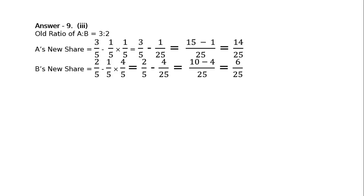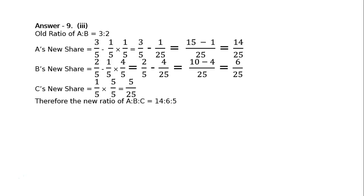B's new share: 2/5 minus (1/5 multiplied by 4/5). That is equal to 2/5 minus 4/25. LCM 25: 10 minus 4 equals 6/25. C's new share is 1/5. To equalize the denominator, multiply by 5/5, giving 5/25. Therefore the new ratio of A to B to C is equal to 14:6:5.